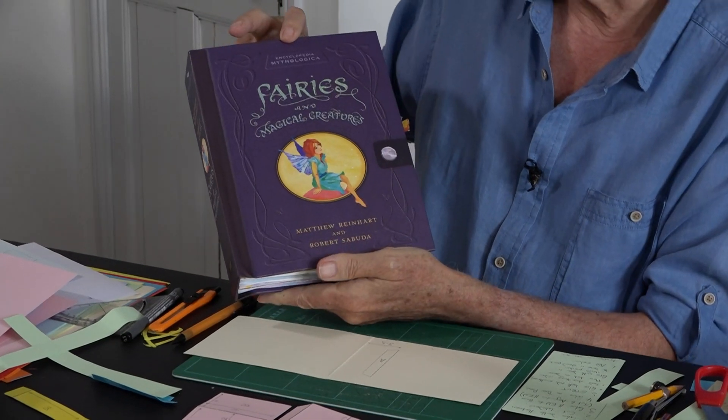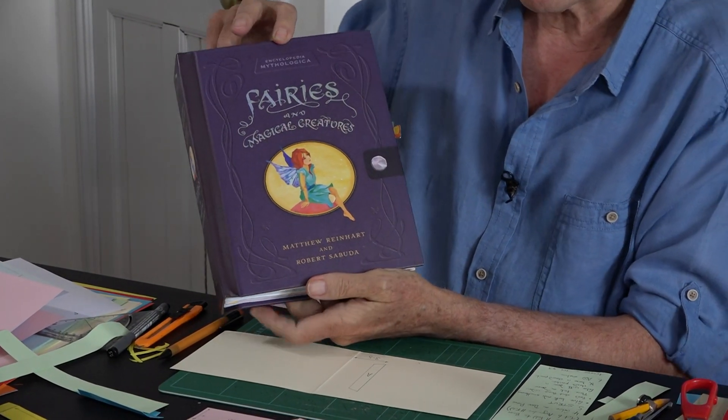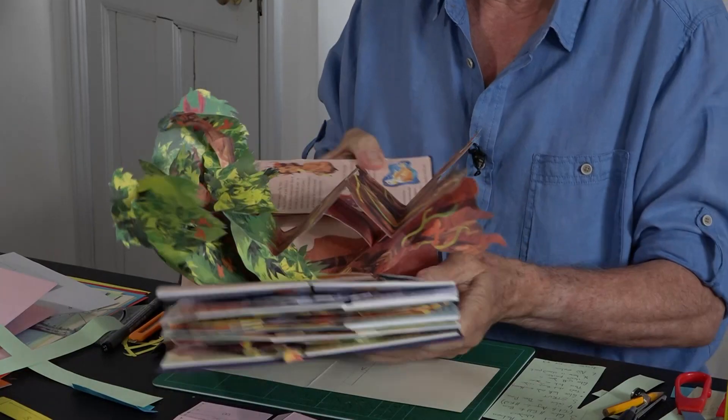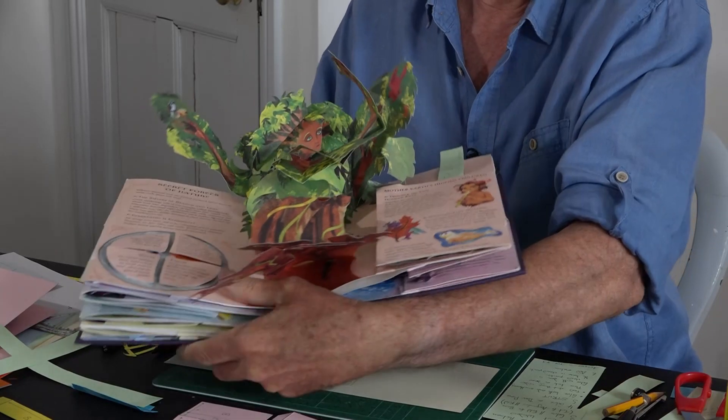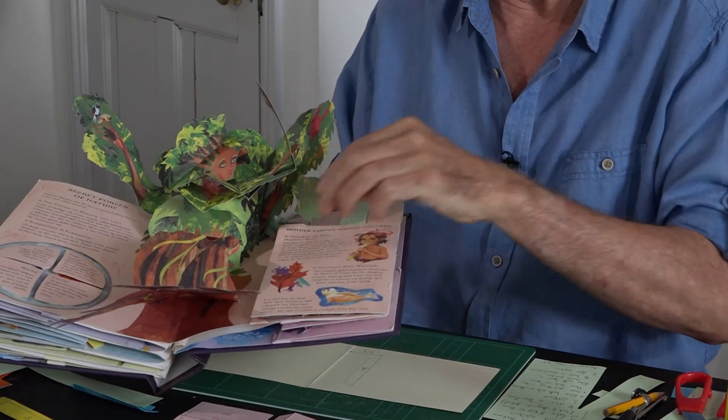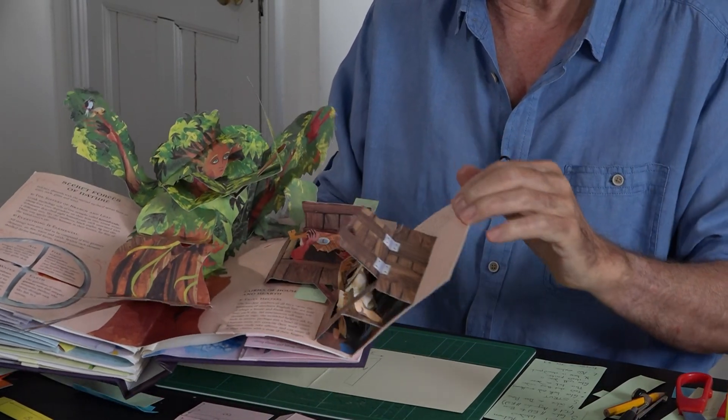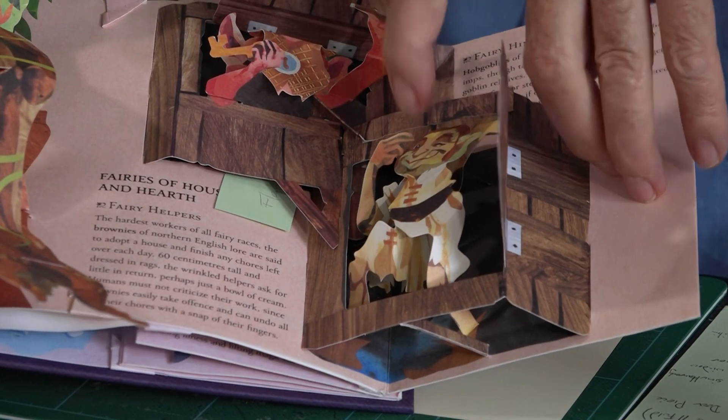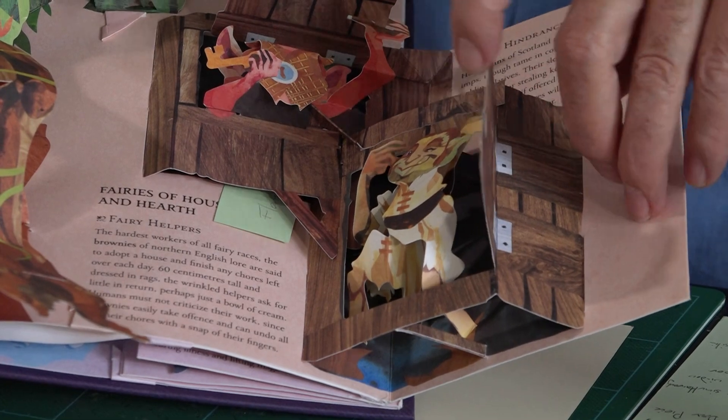Fairies and Magical Creatures by Matthew Reinhart and Robert Sabuda. If we look at this one, it's under the flap on the side. This is the mechanism we'll be doing.